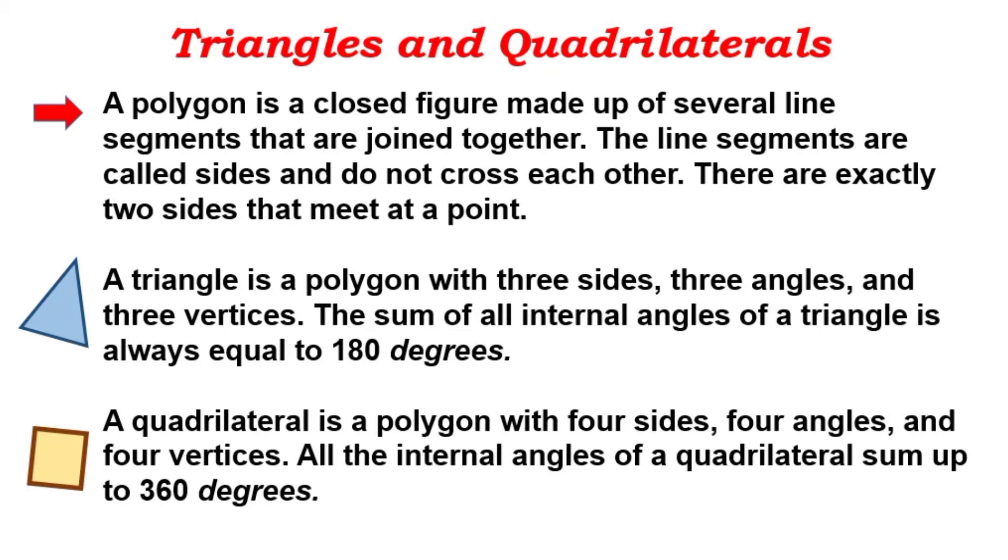A triangle is a polygon with three sides, three angles, and three vertices. The sum of all internal angles of a triangle is always equal to 180 degrees.